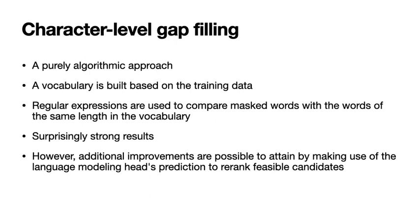For character-level gap filling, we employed a simple approach based on dictionary lookups. We build a vocabulary based on the training data. When we encounter a word with a masked character in it, we employ this vocabulary to make a lookup. If there are suitable candidates, we simply take the first one and use it to fill the gaps. Surprisingly, this approach has shown some strong results.